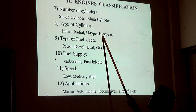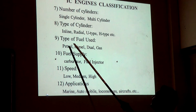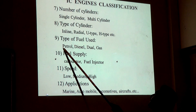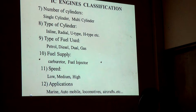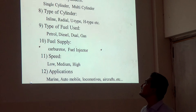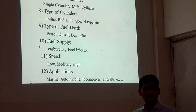The next classification is by type of fuel used: petrol, diesel, dual fuel, and gas. The most common are petrol engines and diesel engines. If petrol is used as fuel, it is called a petrol engine; if diesel is used, it is called a diesel engine. Next is fuel supply: if fuel is supplied through a carburetor, it is a carburetor-type engine; if fuel goes through a fuel injector, it is a fuel injector-type engine.